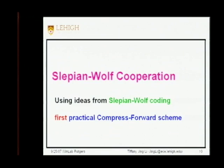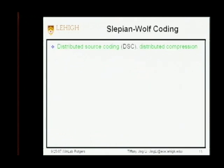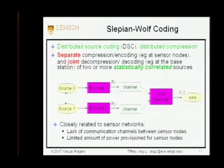The remedy we propose is the so-called Slepian-Wolf cooperation, using the idea from Slepian-Wolf coding. We hope it represents the first practical compress-and-forward scheme. Before describing the actual strategy, I need to mention a bit about Slepian-Wolf coding technology, also known as Distributed Source Coding (DSC).